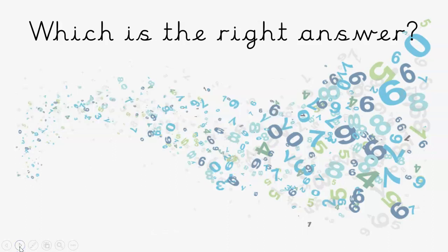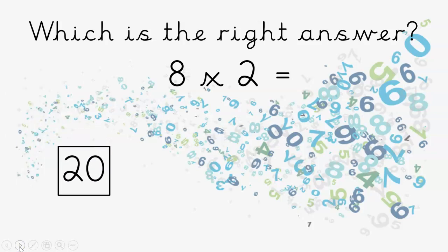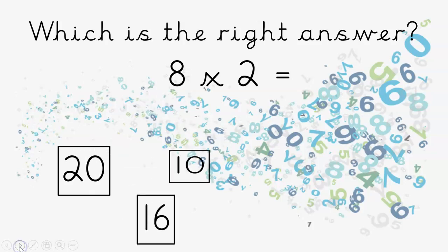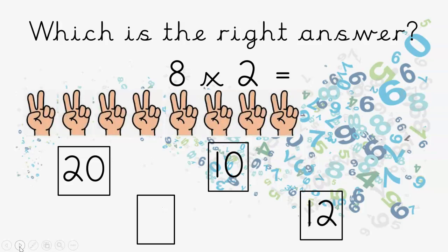Which is the right answer this time? Eight times two — try and work it out. Is it twenty? Is it sixteen? Is it ten? Or is it twelve? There's our eight times two. That's right, if you said sixteen. Well done.